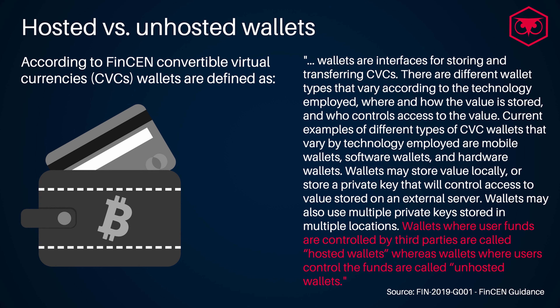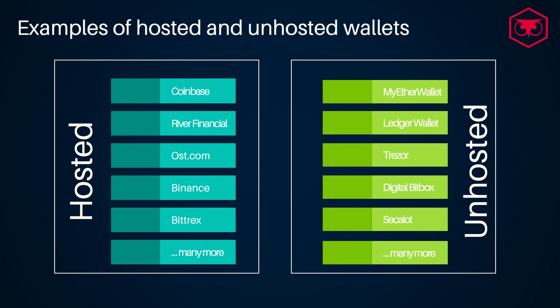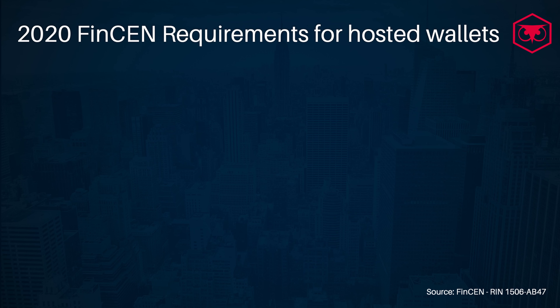It's useful to differentiate between a hosted versus unhosted wallet. According to the FinCEN guidance issued in 2019, wallets are interfaces for storing and transferring convertible virtual currencies. There are different wallet types that vary according to the technology employed, where and how the value is stored, and who controls access to the value. Examples of different types of CVC wallets include mobile wallets, software wallets, and hardware wallets. Wallets may store value locally or store a private key controlling access to value stored on an external server.